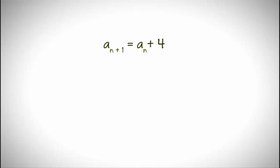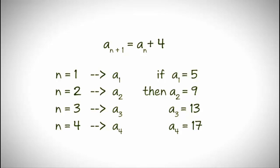The first a in the sequence will have n equals 1, and therefore you'll get a sub 1. The second number in the sequence will have n equal 2, and here we'll have a sub 2. For example, the hundredth number in the sequence will be a sub 100.